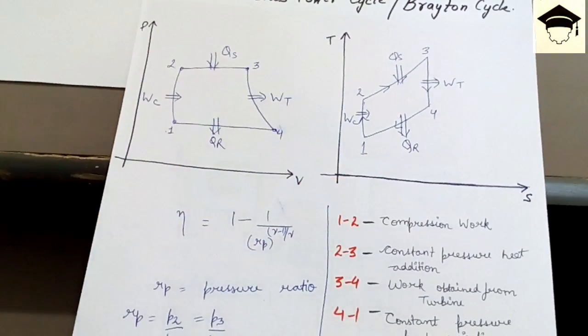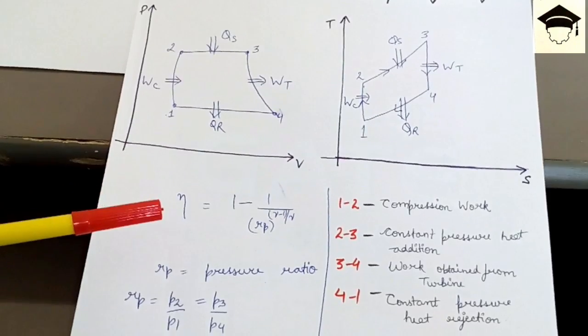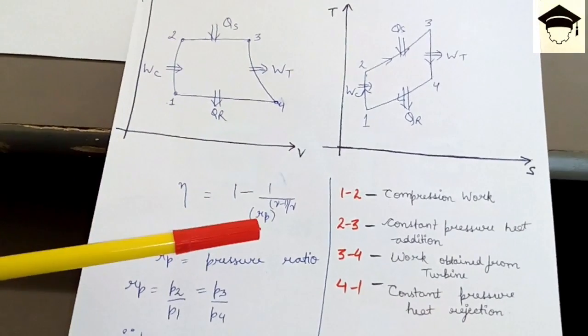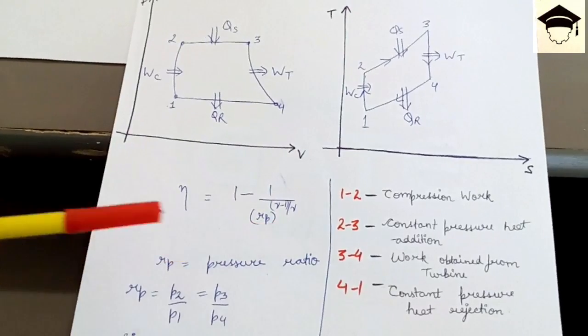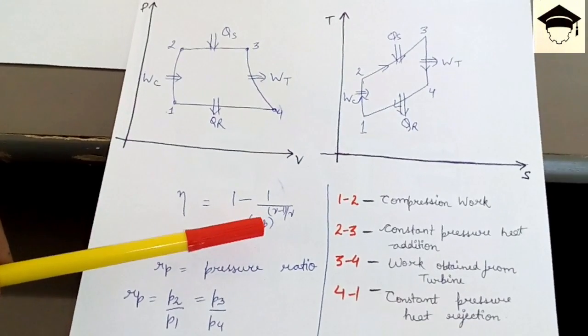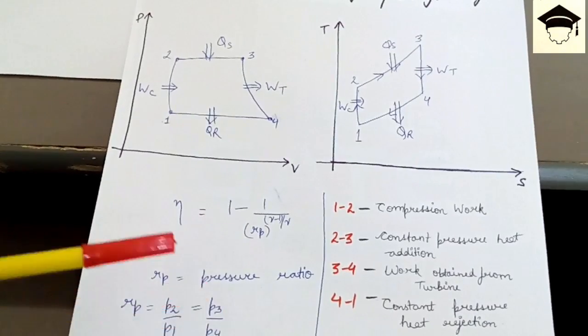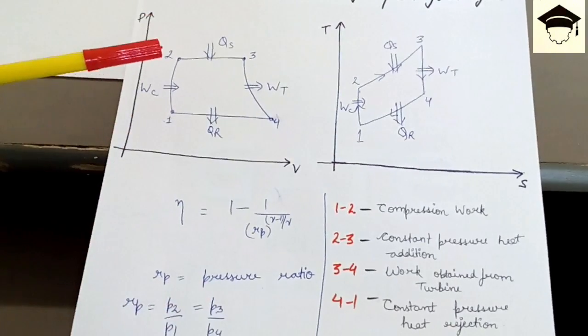Similarly on the TS diagram, the maximum efficiency is given by 1 minus 1 upon rp to the power gamma minus 1 upon gamma where gamma is equal to 1.414.